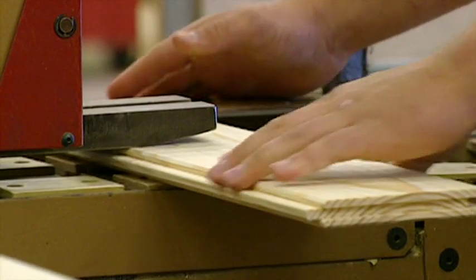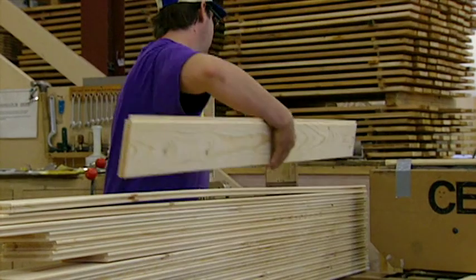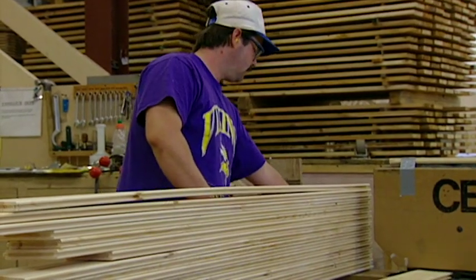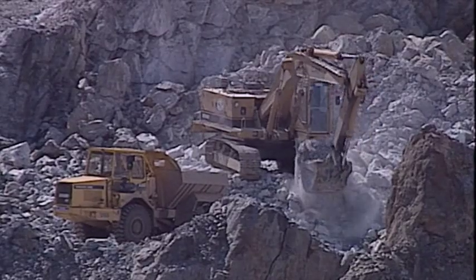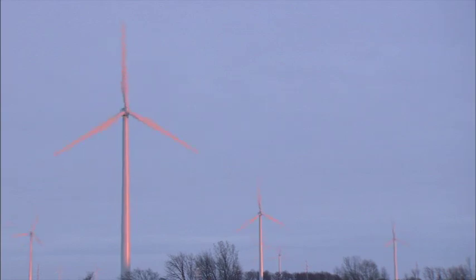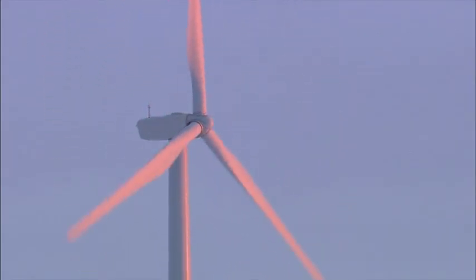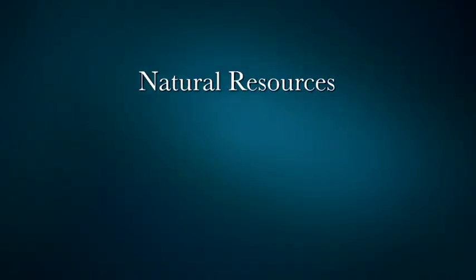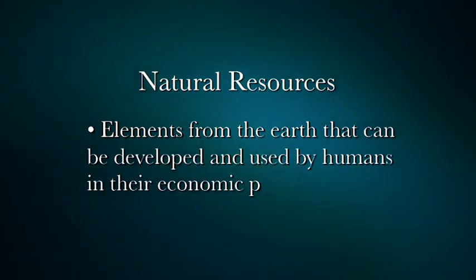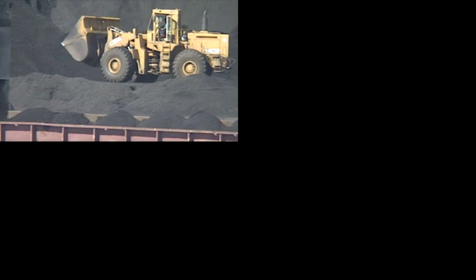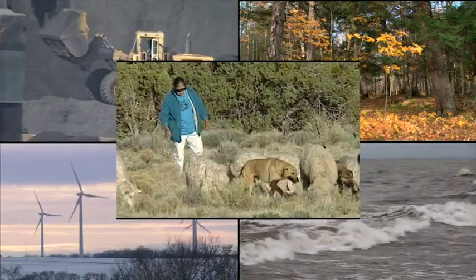Climate and topography also influence the production of goods and services. Some land may be well suited for development of forest products, for agricultural use, or for mining, oil drilling or new forms of power generation. These elements are known as natural resources — elements from the earth that can be developed and used by humans in their economic production. Minerals, trees, water, wind and animals are all examples of natural resources.